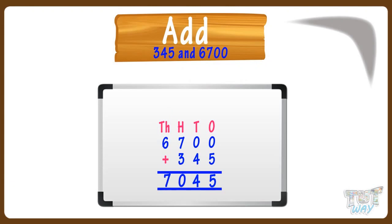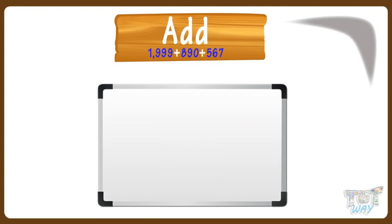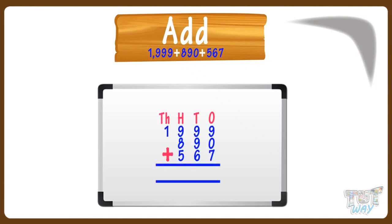Now, let's take another example. We have to add these three numbers. Write each numeral below the mark of its place value — ones place under ones place mark, and tens place under tens place mark. Yes, like this. This is very important.